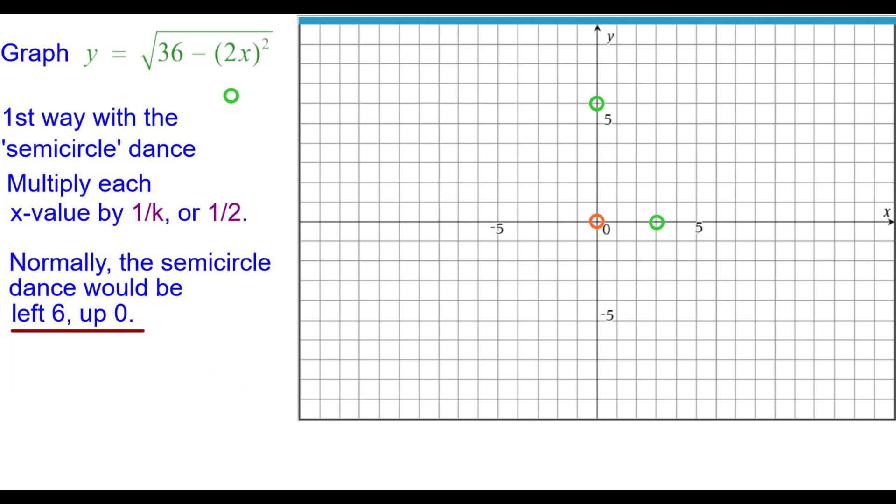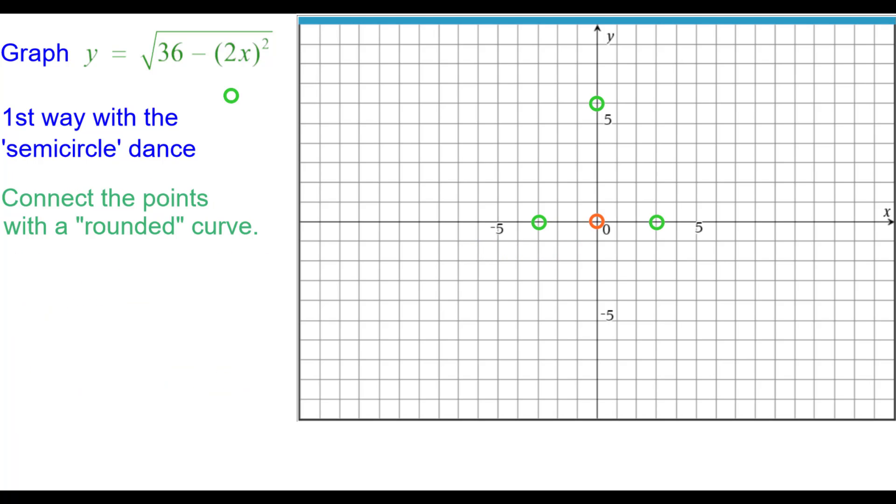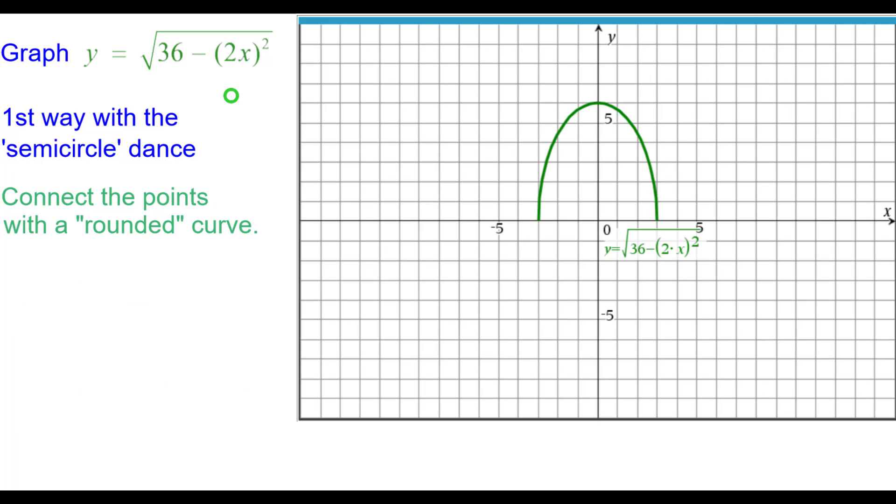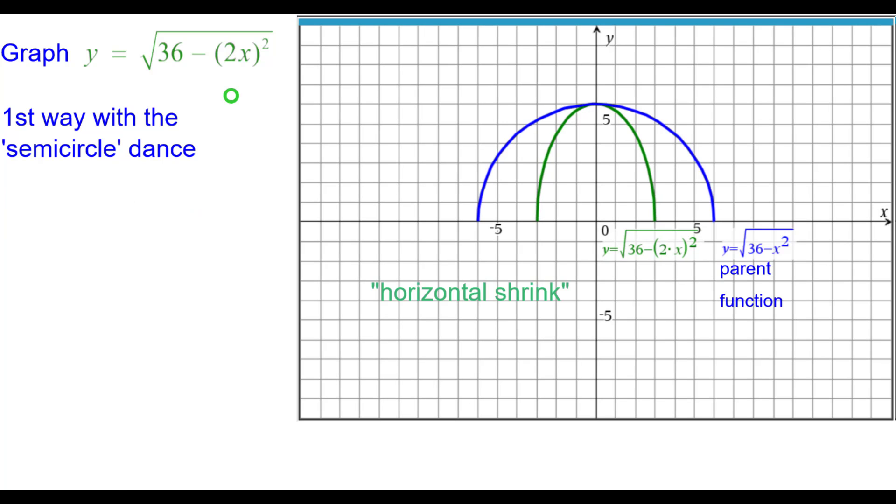And normally it's left 6 up 0, but half of 6 is going to be 3, so it's left 3 up 0. So here are our points, and we need to connect them with a rounded curve that won't be a semicircle, but it is a rounded curve. And comparing that to the parent function, you can see that this is a horizontal shrink.